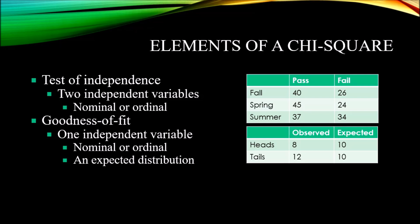The equation for calculating the expected values is the row total multiplied by the column total divided by the total sample size. In this example, the row total would be 40 plus 26. The column total would be 40 plus 45 plus 37. Those two totals would be multiplied together, and that would be divided by the sum of all of the values from all six cells that we have here. So we're comparing actual values to expected values.